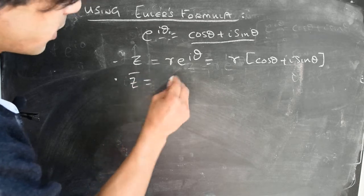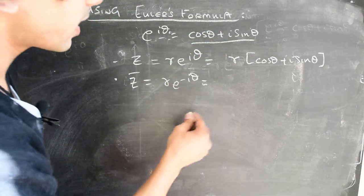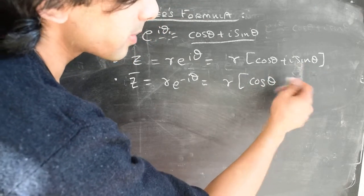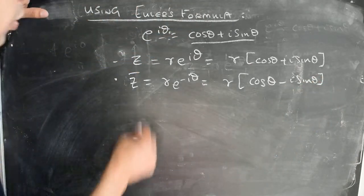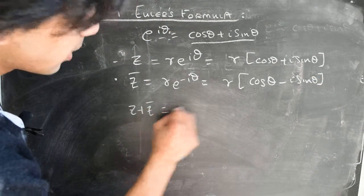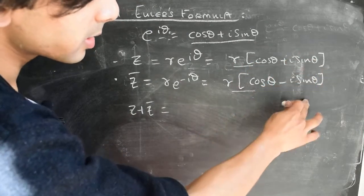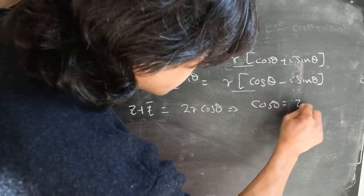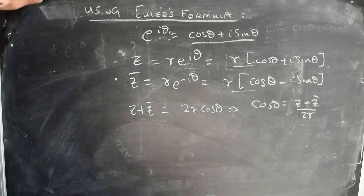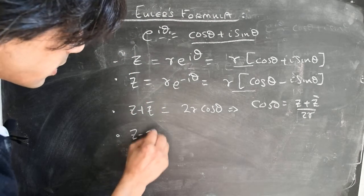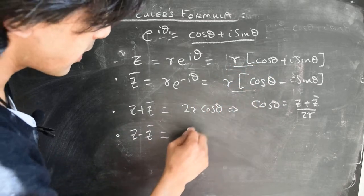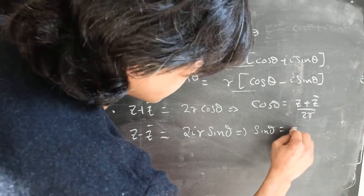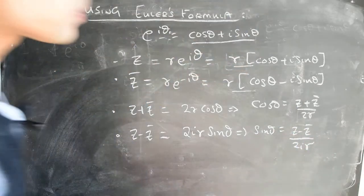Likewise, z-bar can be written as r·e to the power minus i·theta, and using Euler's identity with minus theta, this becomes r times (cosine theta minus i·sine theta). If we add z plus z-bar, the imaginary parts cancel and we get 2r·cosine theta, so cosine theta equals (z + z-bar) divided by 2r. If we subtract z minus z-bar, the real parts cancel and we get 2i·r·sine theta, so sine theta equals (z − z-bar) divided by 2i·r.